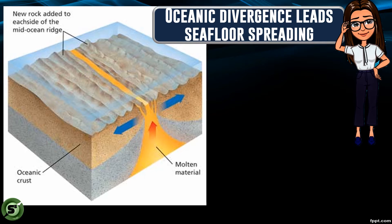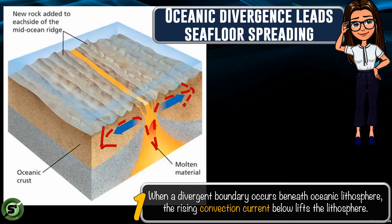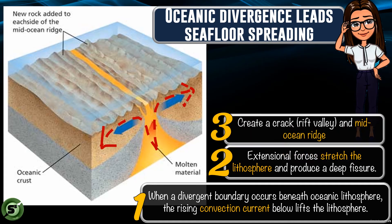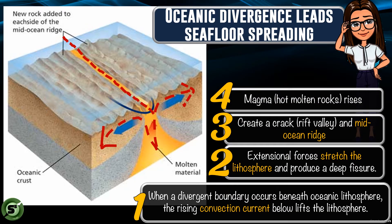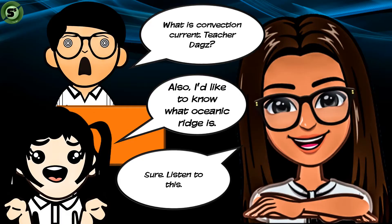Oceanic divergence leads to seafloor spreading, meaning the seafloor becomes wider. When a divergent boundary occurs beneath oceanic lithosphere, the concentration of heat in the mantle plume forms a convection current. This convection current lifts the lithosphere. The extensional forces stretch the lithosphere and produce a deep fissure, leading to the formation of a rift valley and a mid-ocean ridge. Hot molten material rises to the crack along the mid-ocean ridge; as the lava solidifies, new oceanic crust is formed and the seafloor becomes wider.